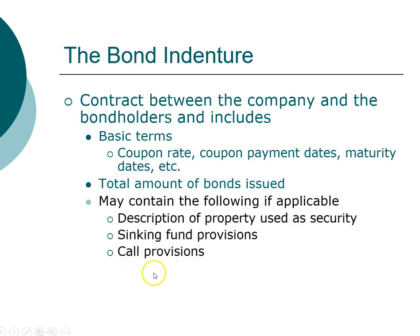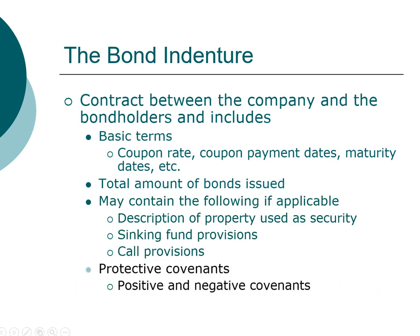Call provision is different — it allows the company the option to pay off the bonds early. This is a prepayment option, and since it is an option and not an obligation, the company will only choose to call the bond if it is to their advantage. Therefore, a bond that has a call provision will typically carry a higher coupon rate.